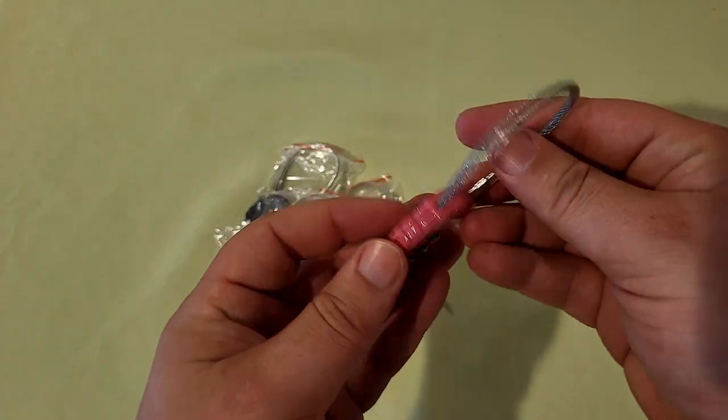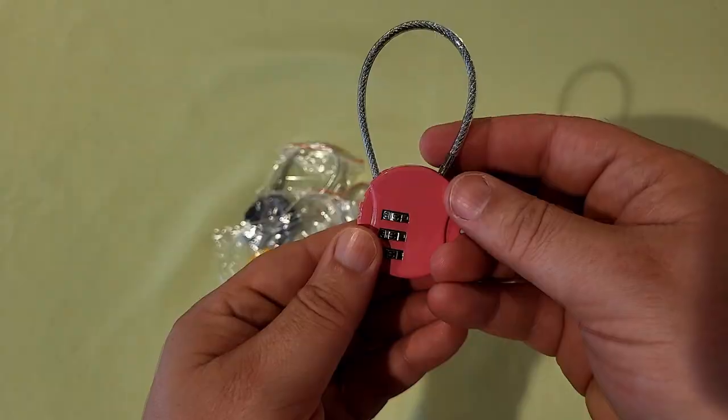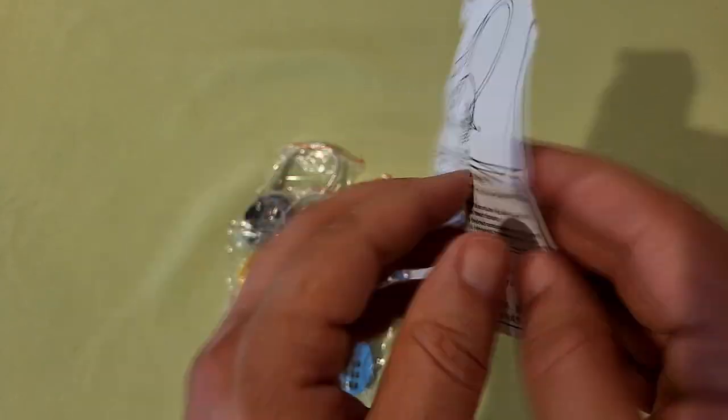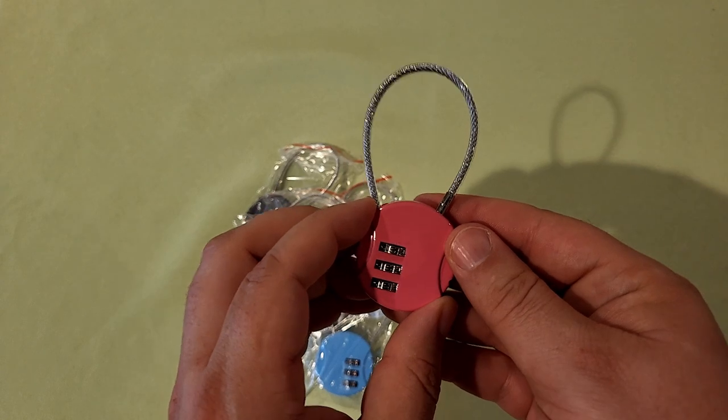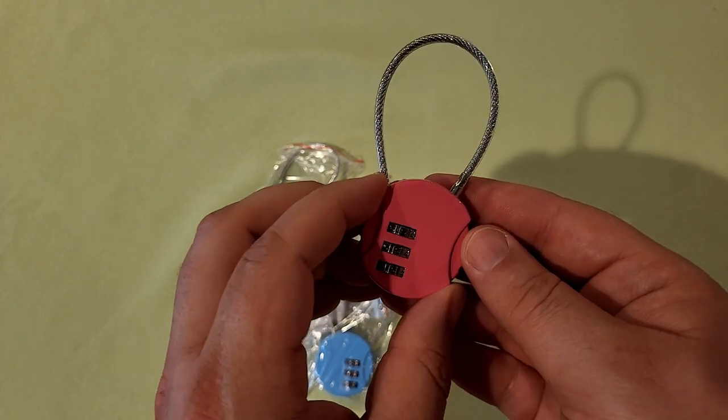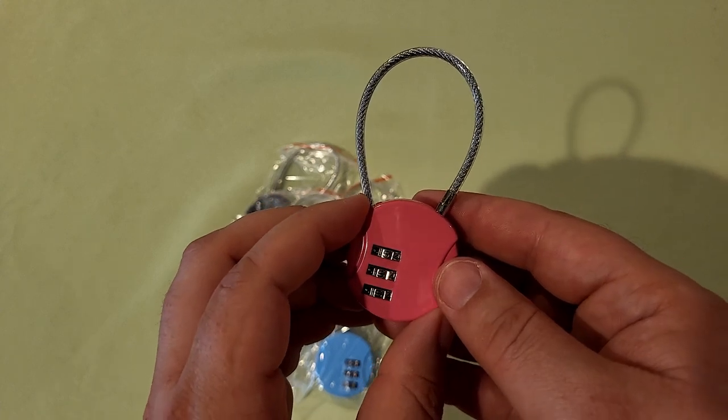Also came with instructions that show you how to change the combination, but it's exactly like I said. These can be used for things like handbags, bags, cabinets, drawers, stores, sports lockers, fences, toolbox, luggage, all kinds of things like that. It'll keep everything safe.